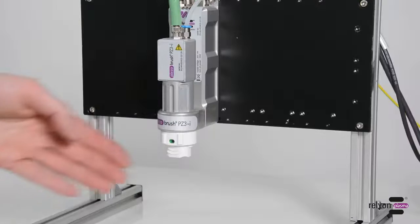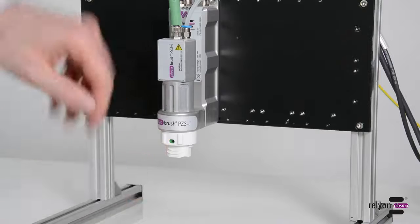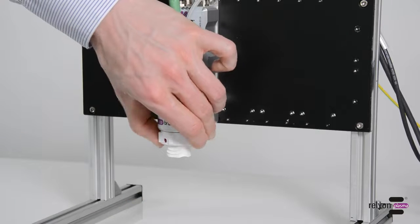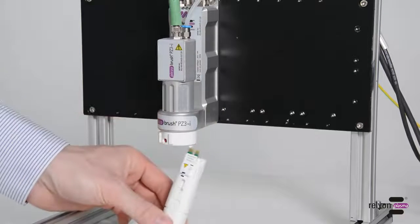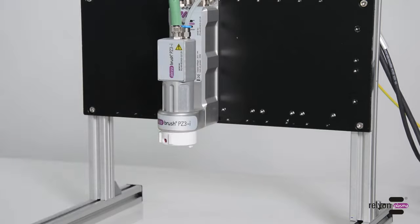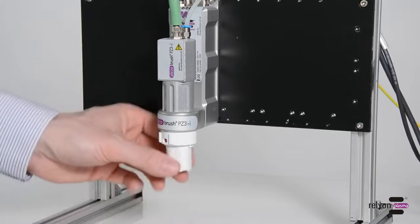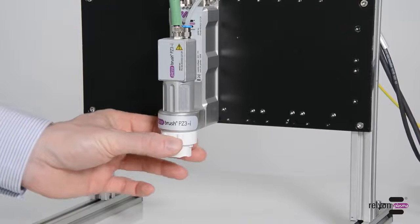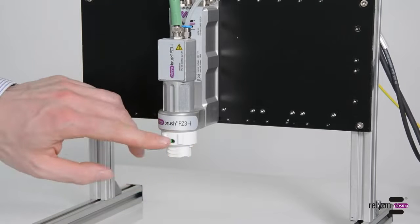If, on the other hand, the device has sufficient free space, the module carrier does not have to be removed. Instead, you can simply loosen the locking ring, remove the module, insert the new module, and close the locking ring.